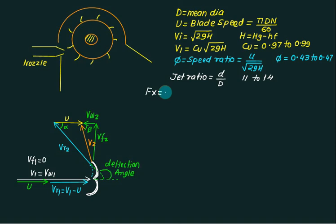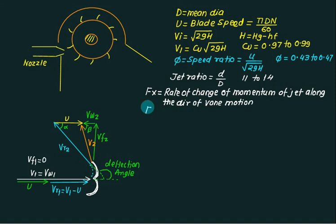Fx we call the rate of change of momentum of the jet along the direction of vane motion. The mass flow rate, m dot, multiplied by change in velocity along x direction. Change in velocity along x direction.